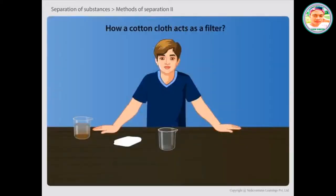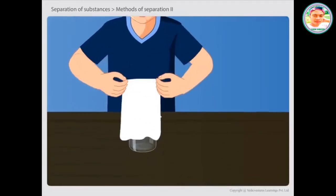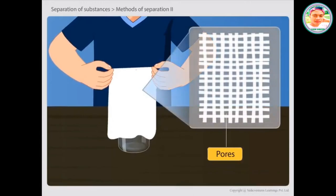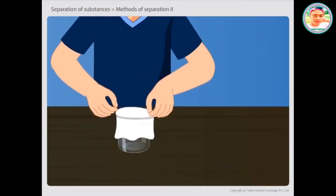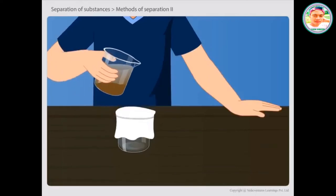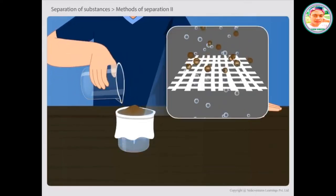Let us learn how a cotton cloth acts as a filter. In a piece of cloth, small holes or pores are there in between the woven threads. It is actually these small pores that act as a filter.